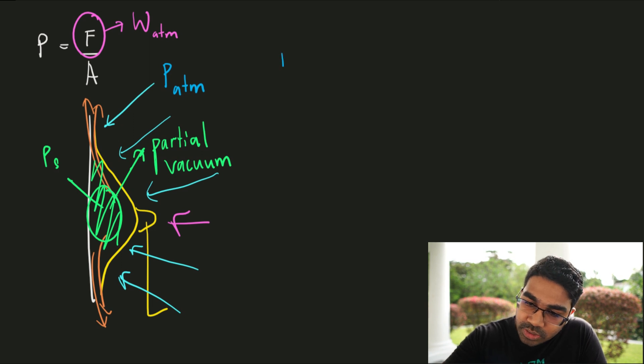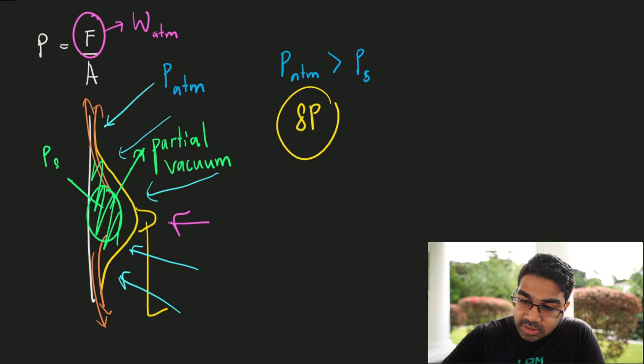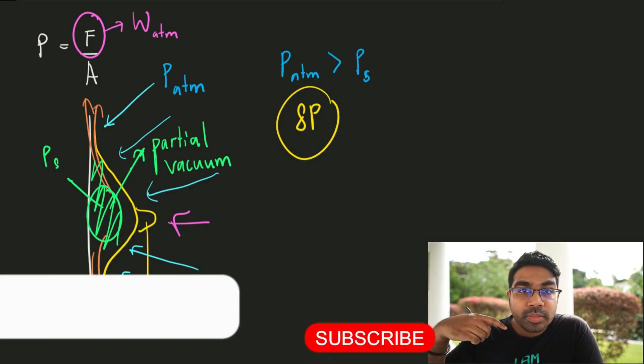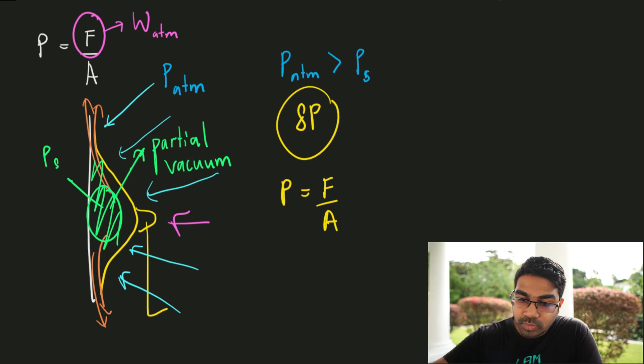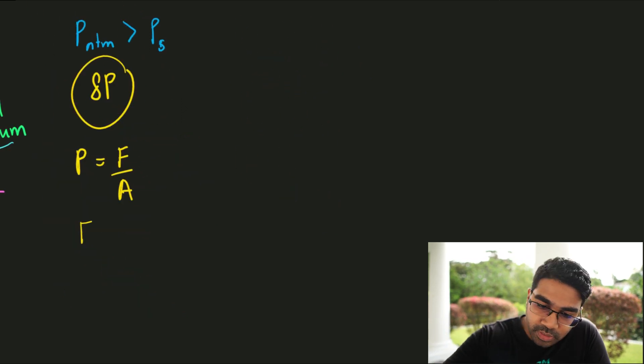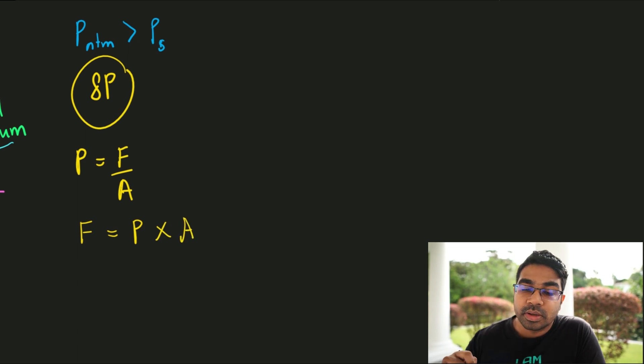So when the pressure of the atmosphere is much greater than the pressure of the suction cup, inside the suction cup, what we get is a difference in pressure. So there is a difference in pressure delta P. And due to the existence of delta P, there will be a force. Now going back to our original formula of pressure is equals to force per unit area. Now we can rearrange this. Force is equals to the product of pressure and area.